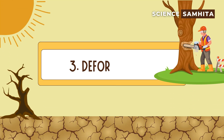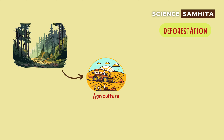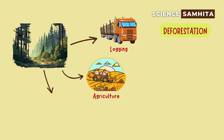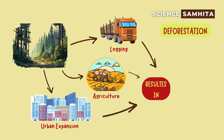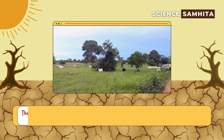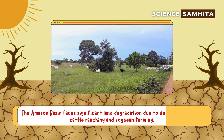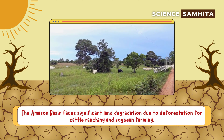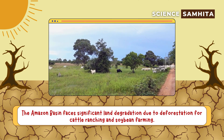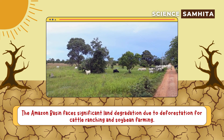Third, deforestation. Trees and vegetation are crucial in maintaining soil structure. Clearing forests for agriculture, logging, or urban expansion exposes the soil. For example, the Amazon basin faces significant land degradation due to deforestation for cattle ranching and soybean farming.